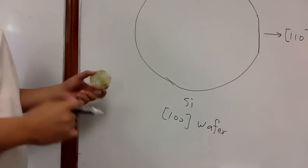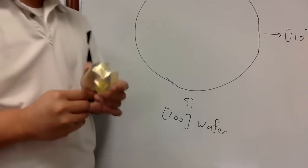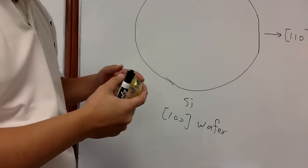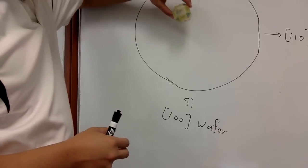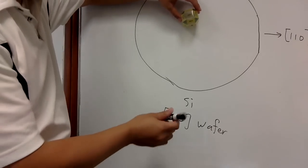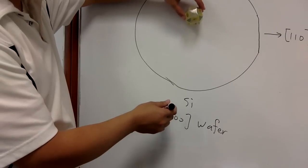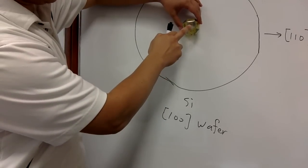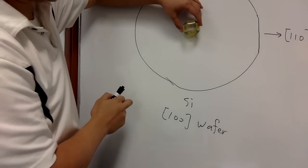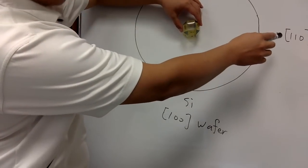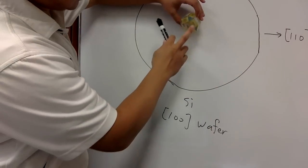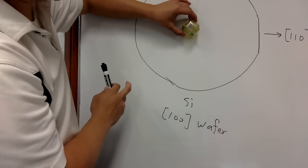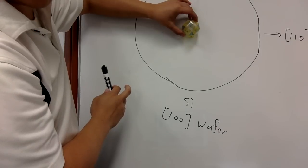A (100) wafer with [110] aligned in that direction means that you can find out what's the orientation of the crystalline structure here. If it's a (100) wafer, the direction perpendicular to the wafer is [100]. You put [100] aligned with the surface normal, and you have the [110] direction in that direction — so the yellow color is [110]. You rotate your cube like this — this is your crystalline orientation.